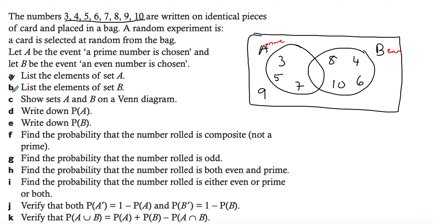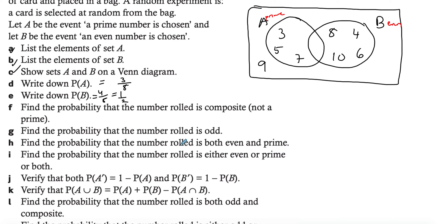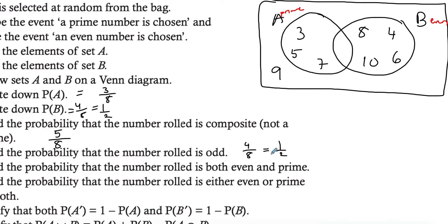The elements of A are three, five, and seven; the elements of B are four, six, eight, and ten. The probability of A is three over eight total elements. The probability of B is four over eight, which simplifies to one half. For the probability of the number being composite — not a prime — we look at everything not in A: that's one, two, four, six, eight, nine, ten — five elements outside A, giving five over eight. For the probability of rolling an odd number, that's everything outside B: four elements, giving four over eight, which simplifies to one over two.